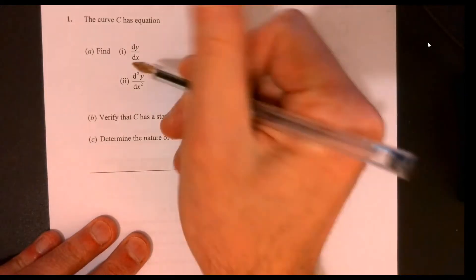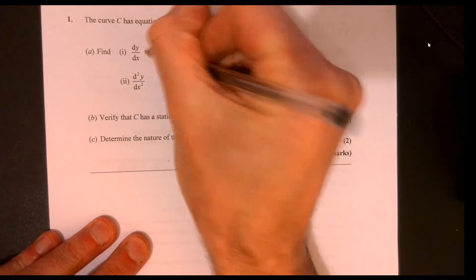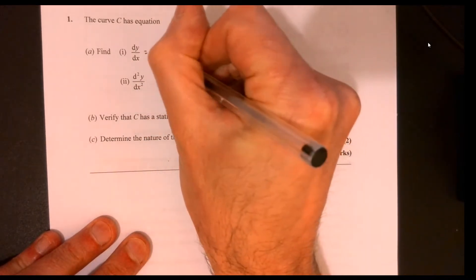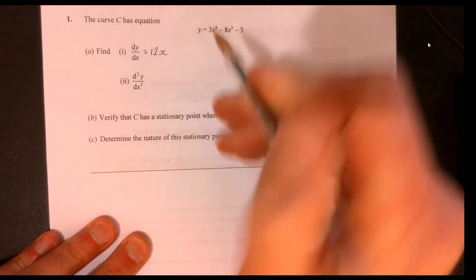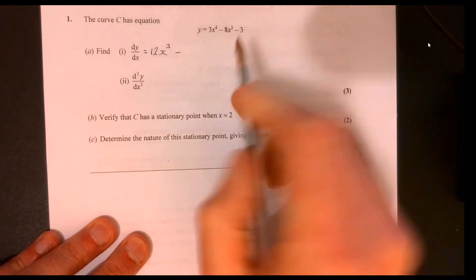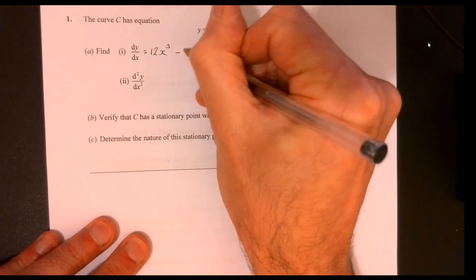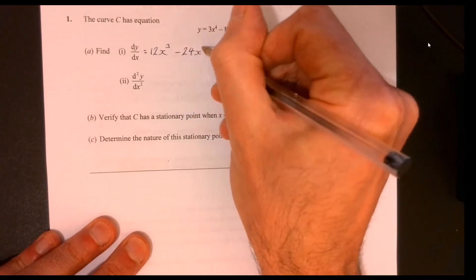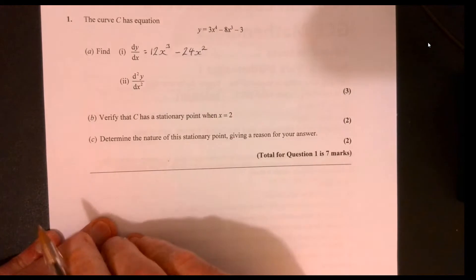Question 1. First question, differentiate. 4 times 3 is 12, lower the power by 1. 3 times 8, lower the power by 1, that disappears.